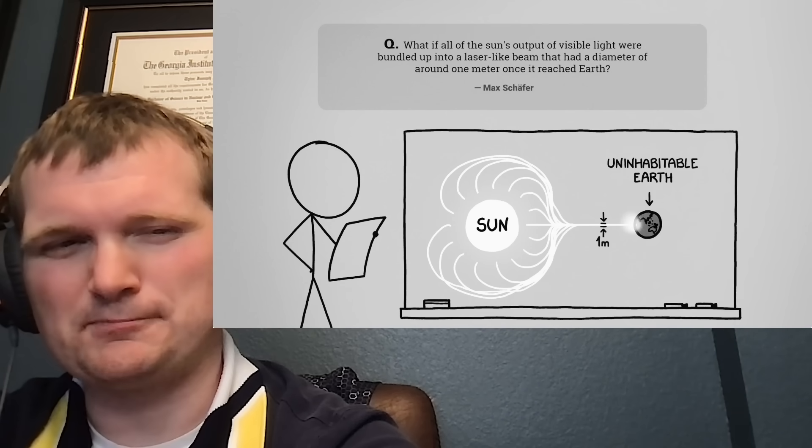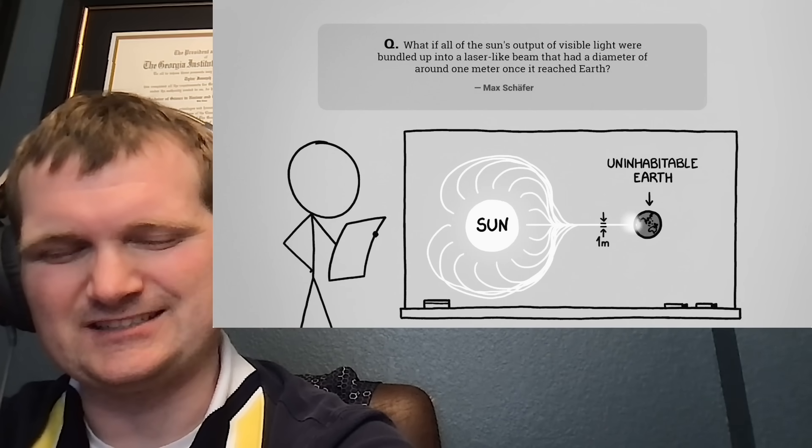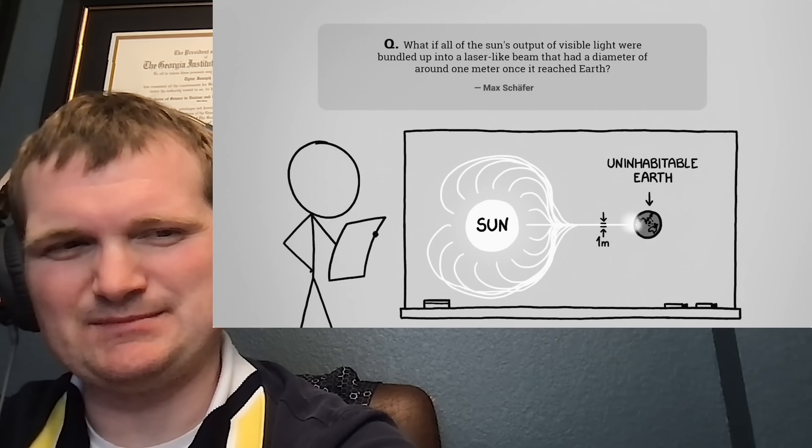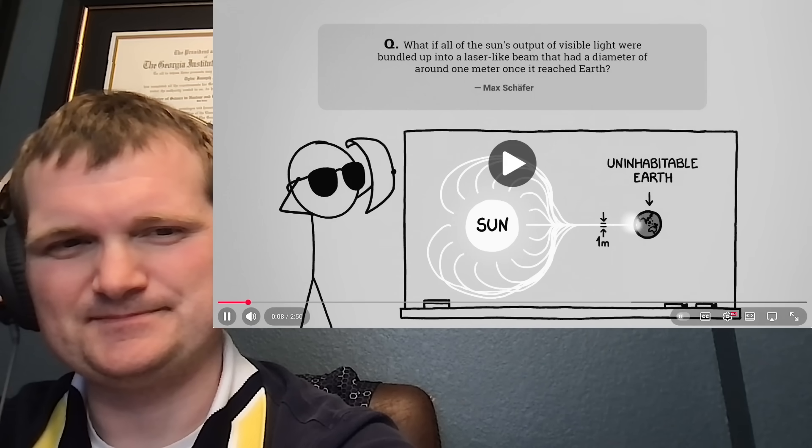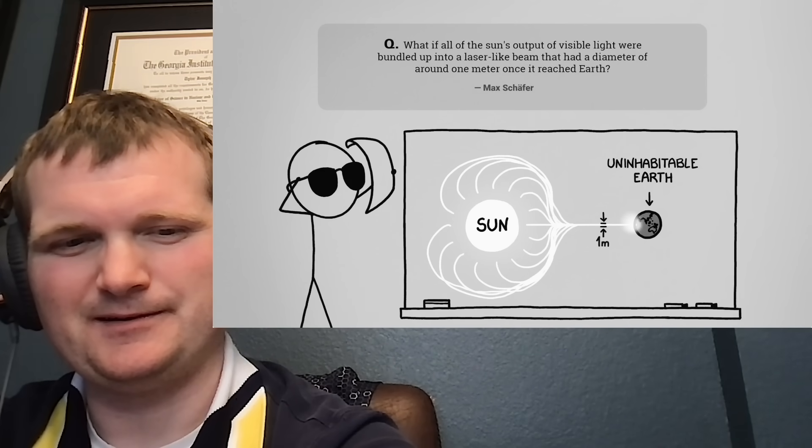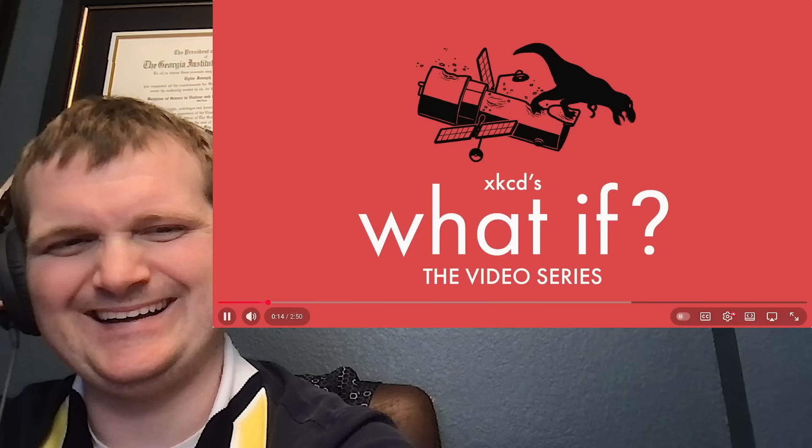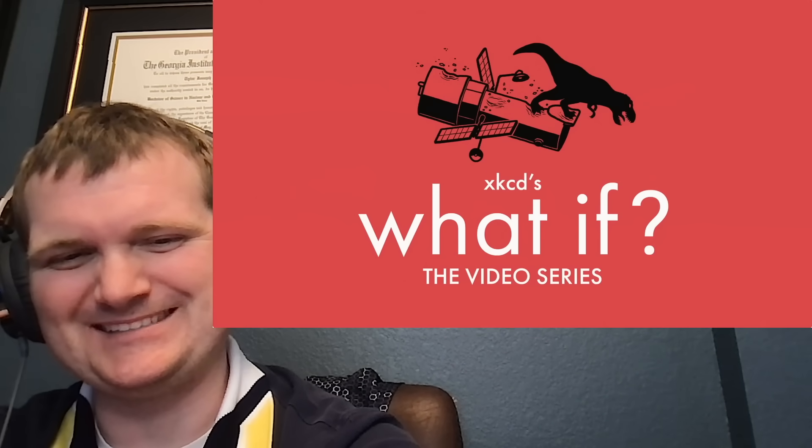At least the math's easy. For comparison, the sun's surface is only 63 megawatts per square meter. So this beam is 10 trillion times brighter than the sun's surface. I usually assume the best of people, but I'll be honest, I suspect Max might not have Earth's best interests in mind.